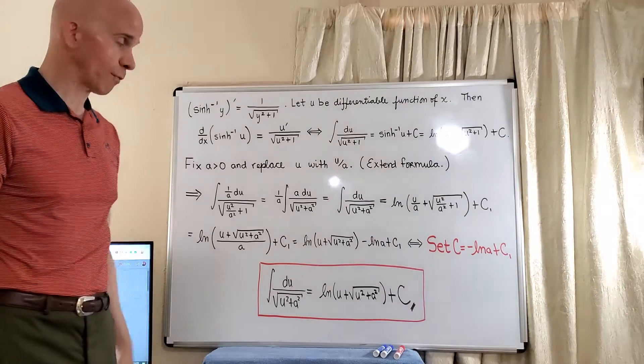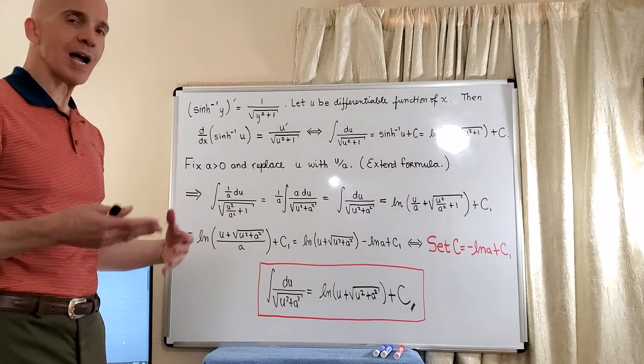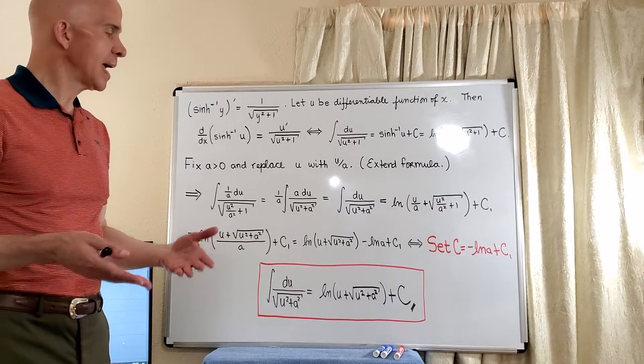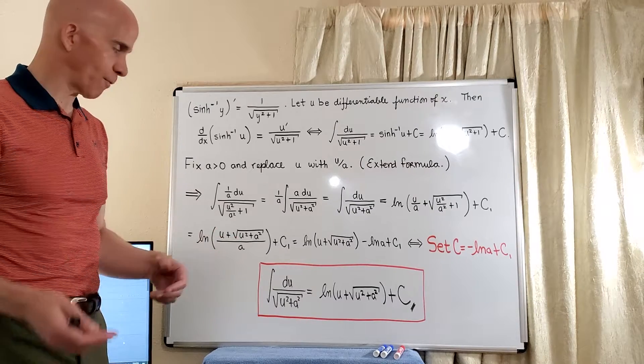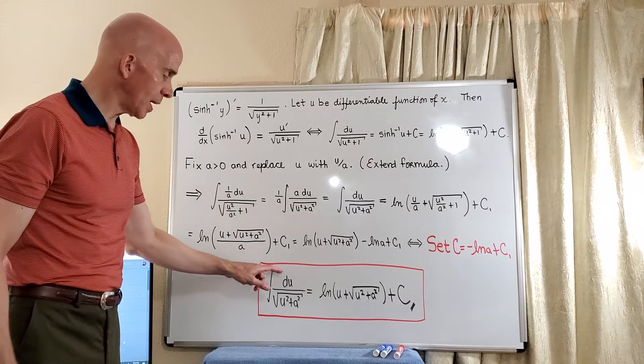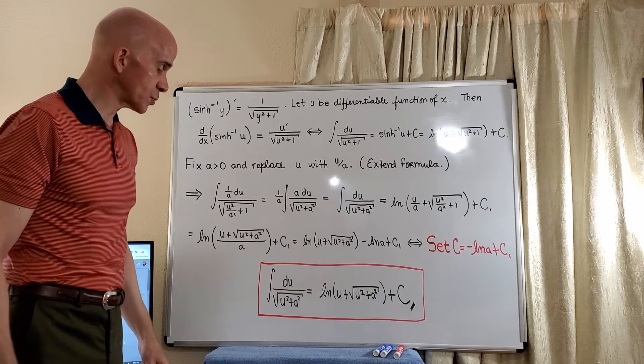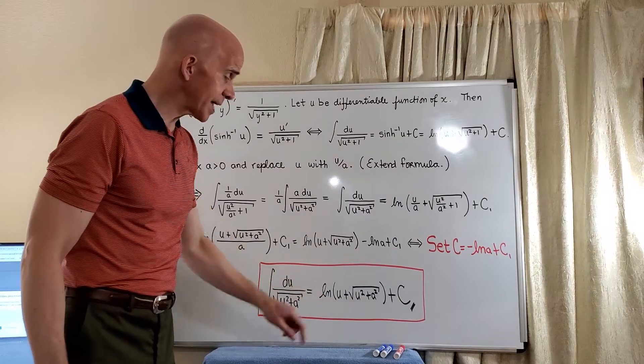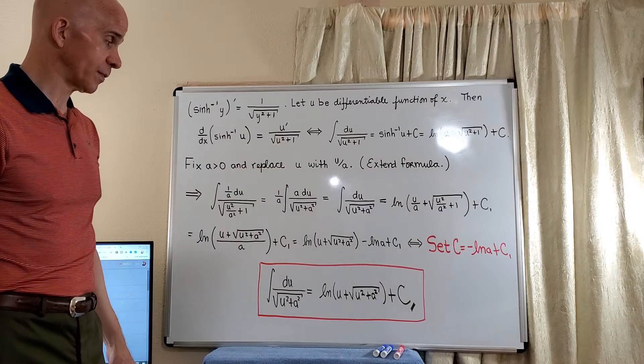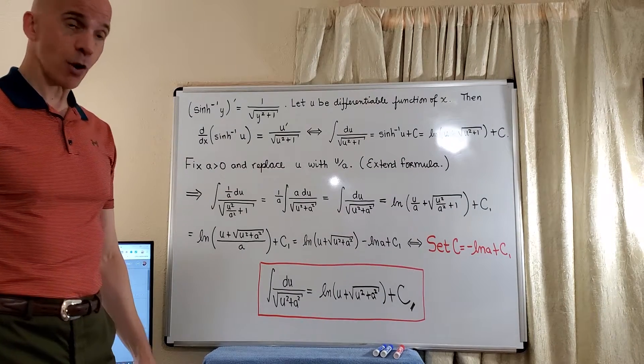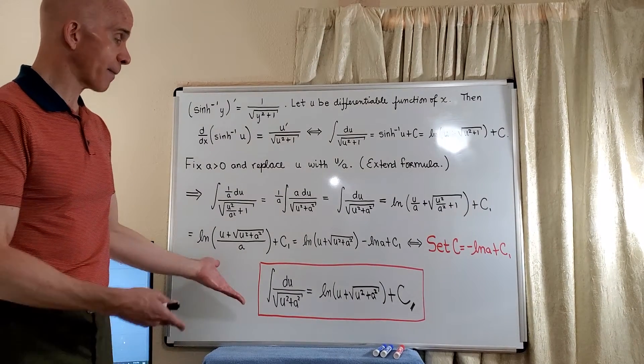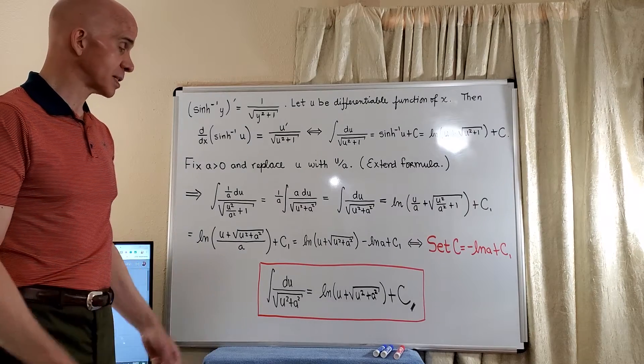So now we have a new integral formula. So these inverse hyperbolic functions give us nice integral formulas. So we have the integral of du over the square root of u squared plus a squared is now the natural log of u plus the square root of u squared plus a squared plus an arbitrary constant. And we'll have opportunities to actually use these in problems.